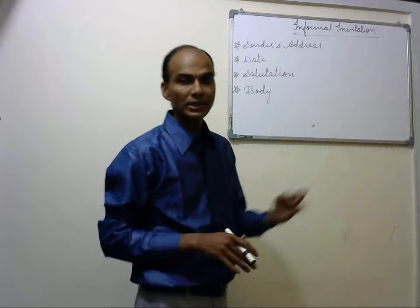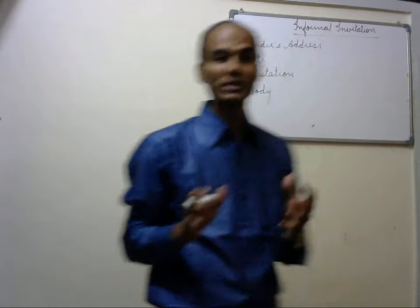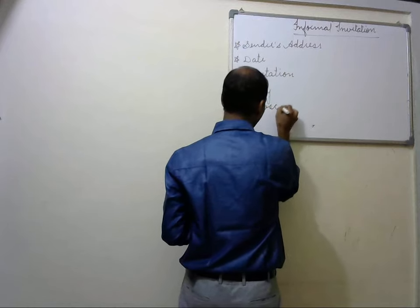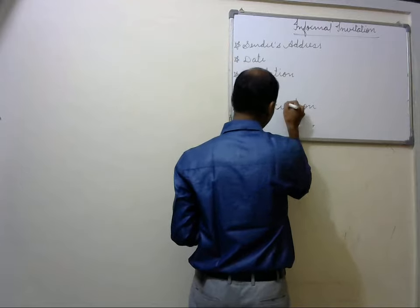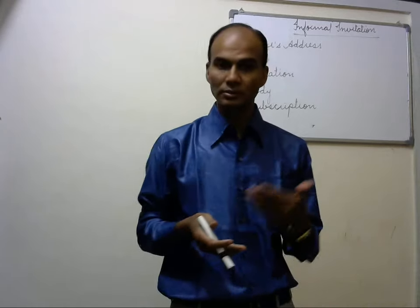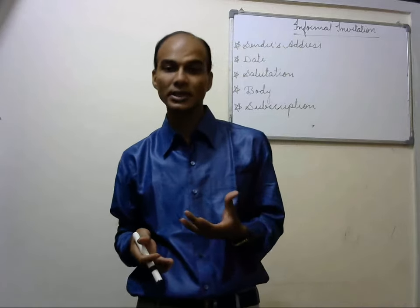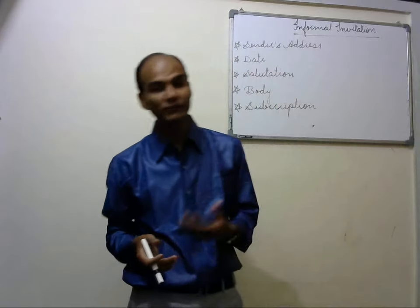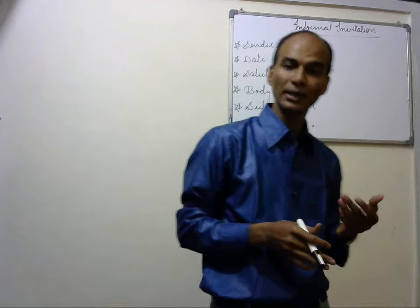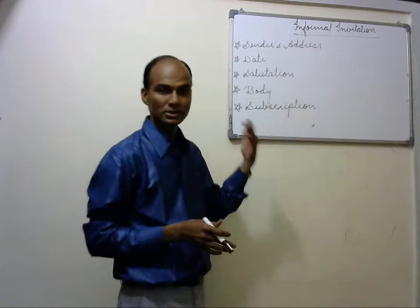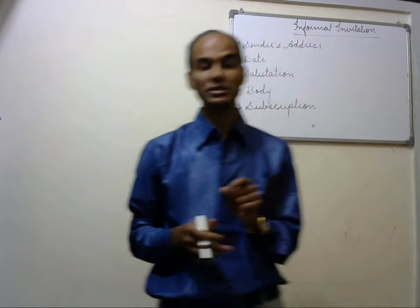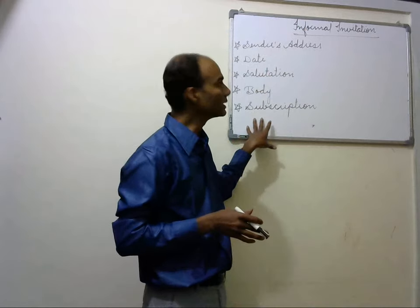In informal invitations we don't need to use third person. You can directly address the person to whom you are writing, so 'you' and 'I' — this kind of expressions can be used. In the body, mention all the details like venue, date, occasion — all these things are to be mentioned. And finally the subscription. Before subscription you can write 'I hope you will grace the occasion with your presence' or 'I hope you will definitely come along with your family, your wife and children.' Then use 'yours lovingly' or 'yours affectionately' for the subscription.